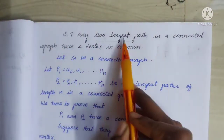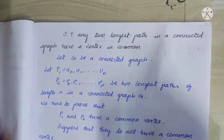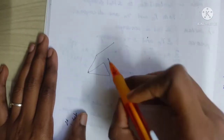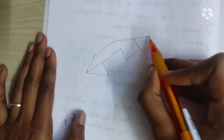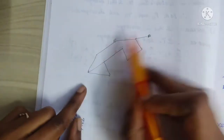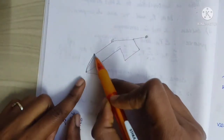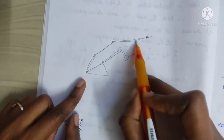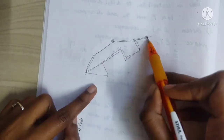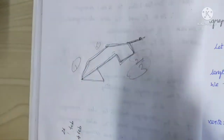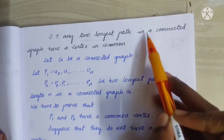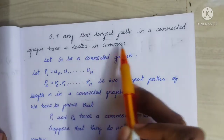So that any two longest paths have a vertex in common. First, we will know how to understand this path. There is a path in this graph. So let's do this. We will see a path in this graph. The path is basic. Let's say: any two longest paths in this graph have a vertex in common.